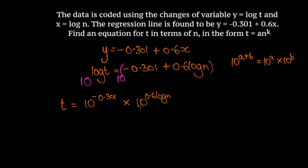For this term, in order to cancel the 10 and the log, I'm going to first apply the power rule. So I'm going to bring the 0.6 to the power of n. That's log a to the b equals b log a. I'm essentially going from right to left here. So 0.6 as the power of n, and then I'll be able to cancel the 10 and the log. So t is equal to 10 to the power of minus 0.301 multiplied by, when the 10 and the log cancel, we're left with n to the 0.6. 10 to the minus 0.301 comes out quite nicely as 0.5. So our final answer is t equals 0.5 times n to the 0.6.